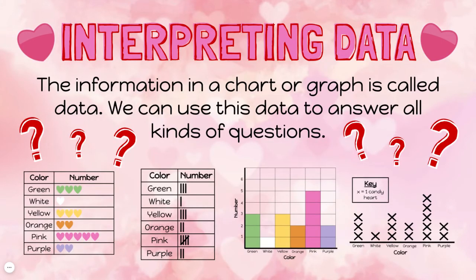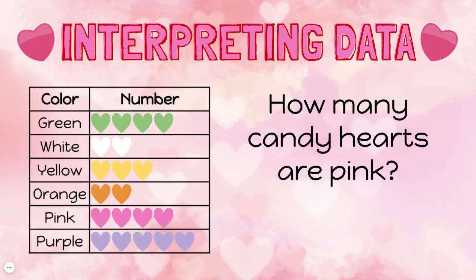We can use the information in a chart or graph to interpret data. We can answer all kinds of questions using this data. Let's take a look at some. How many candy hearts are pink? I'm using a pictograph to answer this question. I can look at pink in my chart and I see that next to it there are four pink hearts, so I know that there are four pink candy hearts.